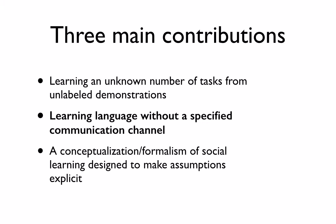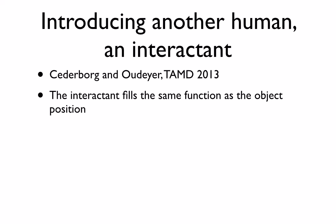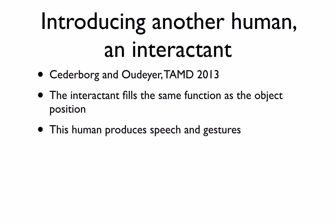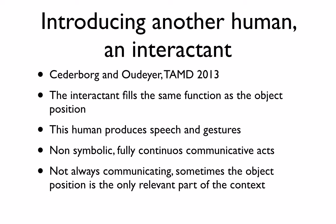Now we move to the second part: learning language without a specified communication channel, based on the TAML article from 2013. We introduce another human — an interactant — who fills the same function as the object position. The human produces speech and gestures as non-symbolic, fully continuous communicative acts — raw speech data with no symbols. Actions are never exactly the same, and communicative tasks are not marked. The imitator needs to figure out what in each demonstration made the demonstrator do what it did.